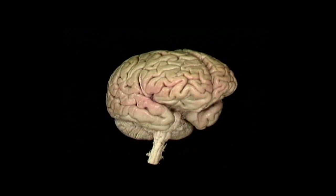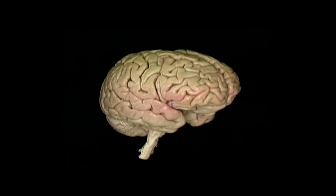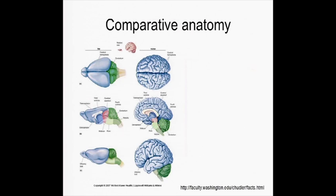The brain stem becomes continuous below with the spinal cord. Here is cerebellum, cerebrum, olfactory bulb from rat and human. And you can see the proportion of cerebellum to cerebrum is very different amongst rats and humans.